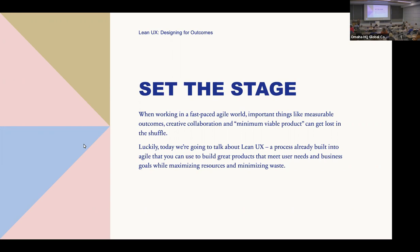So in our busy, fast-paced agile world of sprint planning, retros, stand-ups, backlog refinement, and all the day-to-day task work, we can sometimes lose sight of the big picture. The important things like measurable outcomes, creative collaboration, and creating the minimum viable product can kind of get lost in the shuffle. Luckily, that's where Lean UX comes into play. It is a process that's already built into Agile, and it can be used to build great products that meet our users' needs and business goals while maximizing resources and minimizing waste.